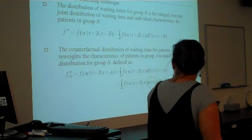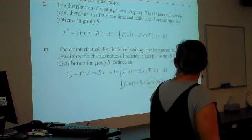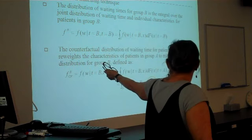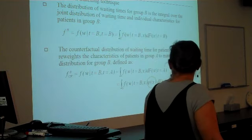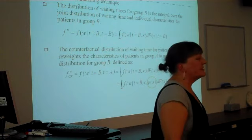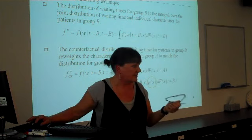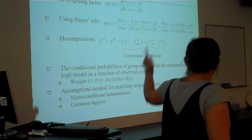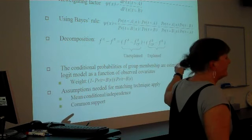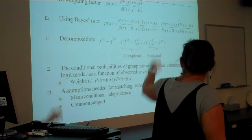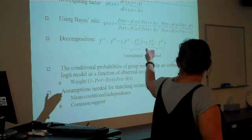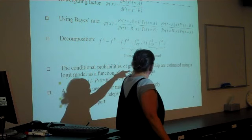And we then re-weight the distribution of one group's characteristics in order to create the distribution of the other group, the counterfactual group. And then we decompose the differences. So, it's based on matching technique. So it's about the probability of being in one group or another. The distribution of waiting times, the integral over the joint distribution in the individual characteristics. And we're going to create a counterfactual waiting time distribution for patients in group B, which re-weights their characteristics in order to reproduce the distribution of the other group. So, the factor that we're going to use to do this is the matching technique. So, it's the probability of being in one group or the other. So, we've got a re-weight factor.